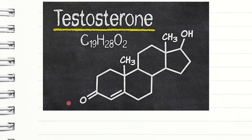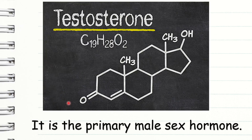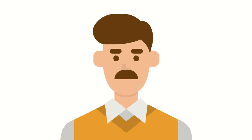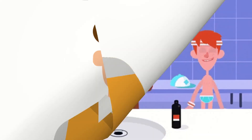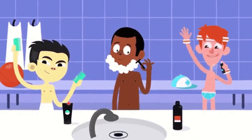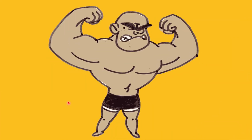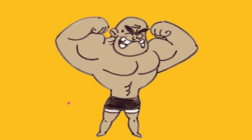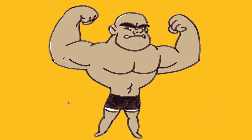Testosterone is the primary male sex hormone. It helps in sperm production and is also responsible for the development of male secondary sex characteristics, such as development of a more angular facial structure, growth of facial and body hair, a deepening of the voice, and increase in bone mass, fat distribution, and muscle size and strength.